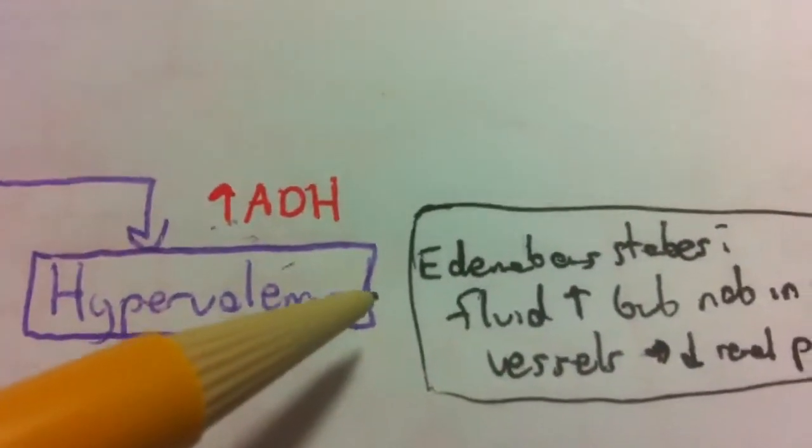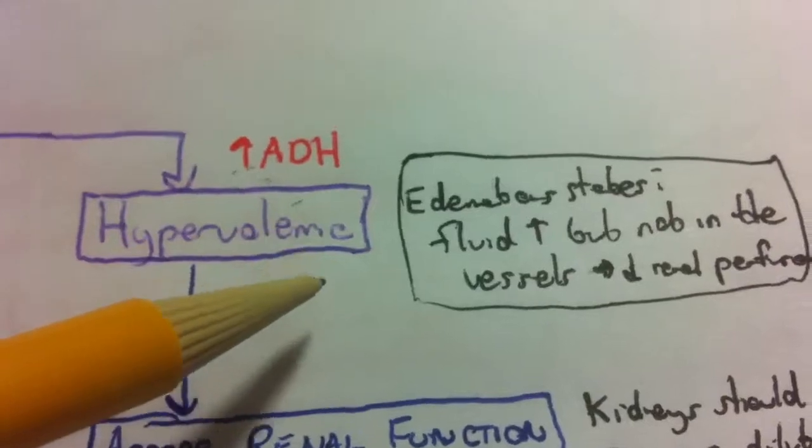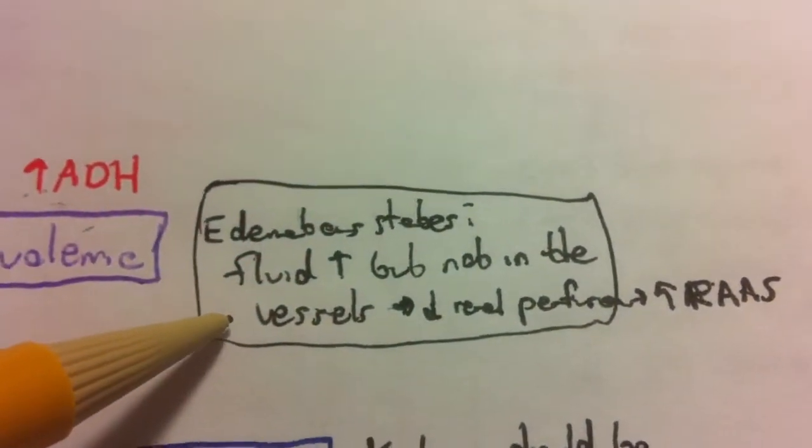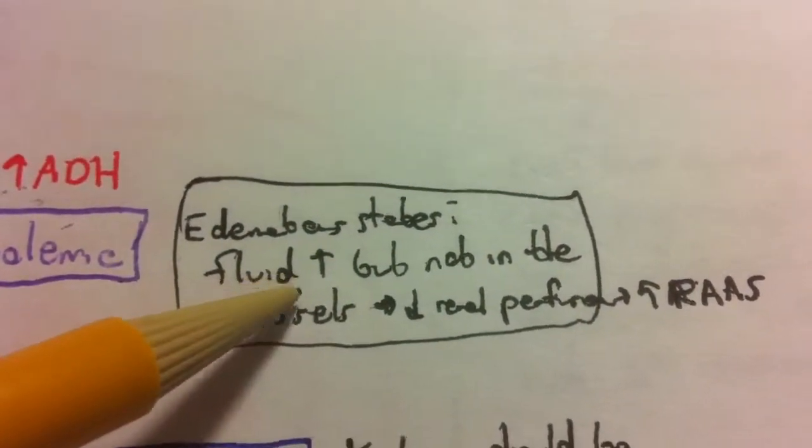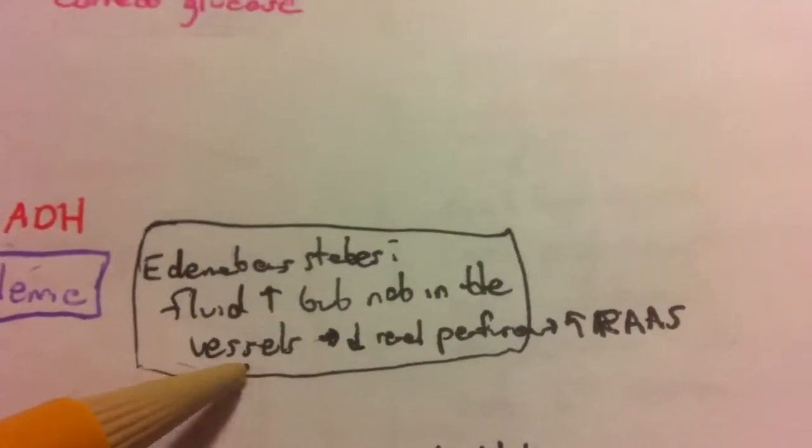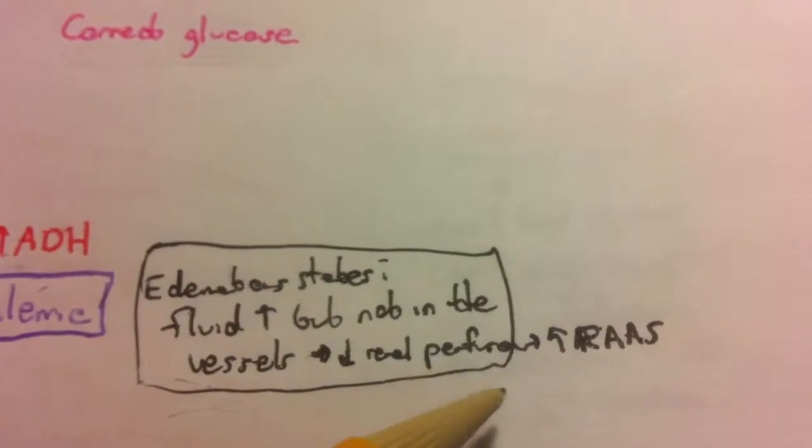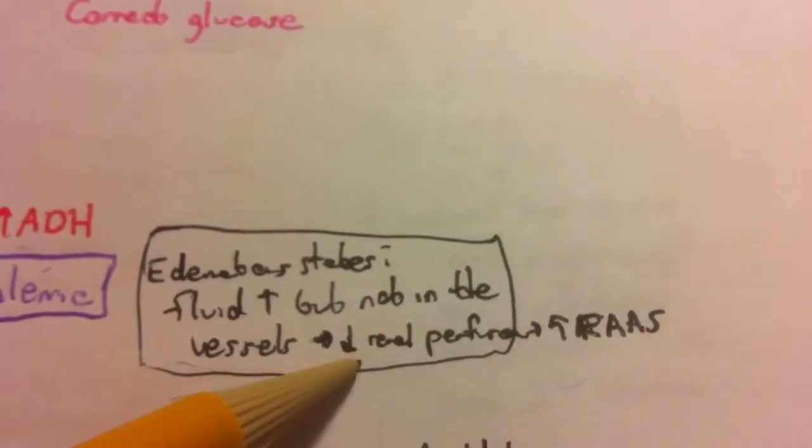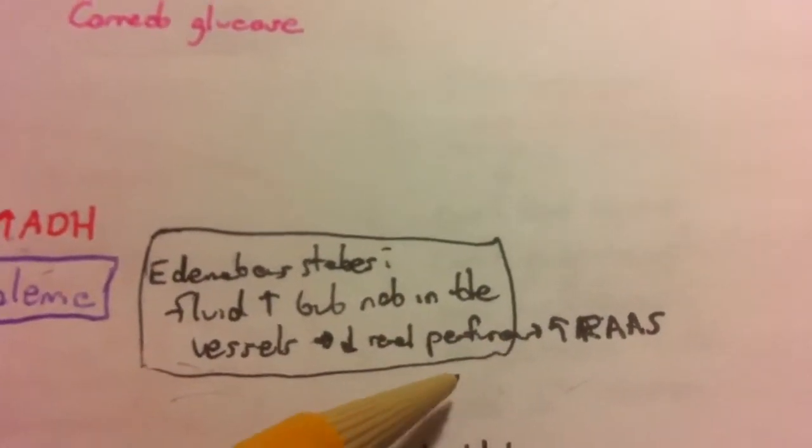In hypervolemia, it's essentially the same mechanism as hypovolemia in that there's an increased fluid, but it's not in the vessels. The fluid is not in the vessels. And so the renal angiotensin aldosterone system is activated, renal perfusion is decreased.